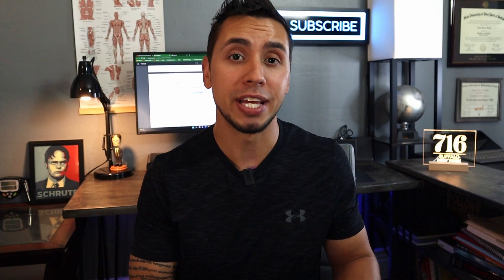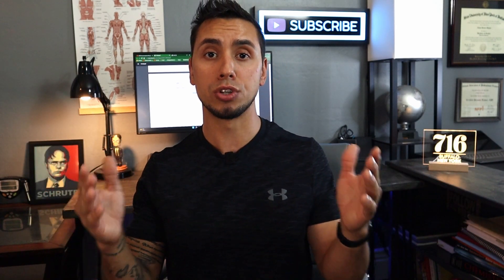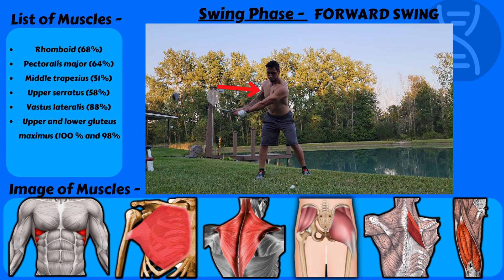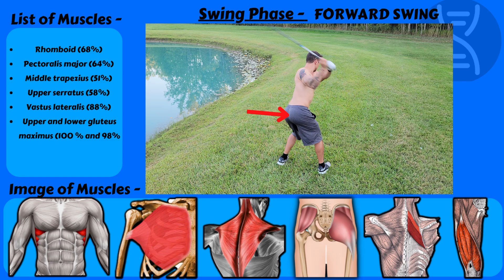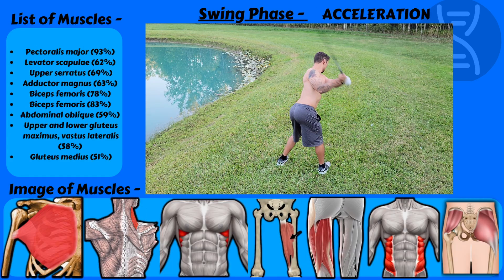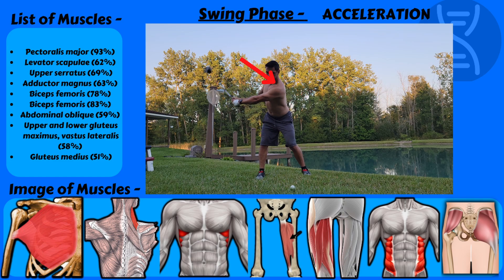To simplify things, I'll group muscles with similar functions together — for example, quad muscles together, hamstring muscles together, and muscles like the rhomboids and middle traps that both retract the shoulder blades will be grouped as well. In the forward swing, the rhomboids and trapezius are both active along with the pec major on the front side of the body. The absolute most active muscle in any phase of the golf swing is in the lower body: the upper and lower glute maximus, with 100–198% activation, along with the quad muscles. In the acceleration phase, the pecs are the second most active muscle, along with the upper serratus and levator scapulae.